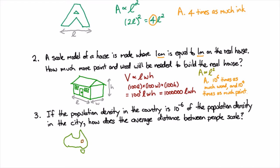So if we have a certain number of people per unit area how does the average distance between people scale? Well we already know that the area scales as L squared. What that means of course is that the length scales as the square root of the area.